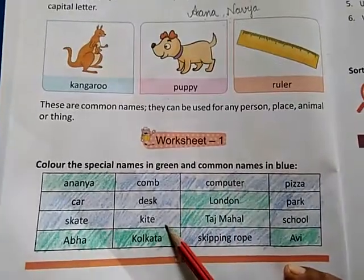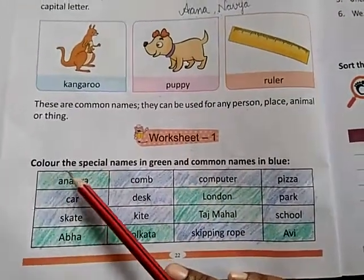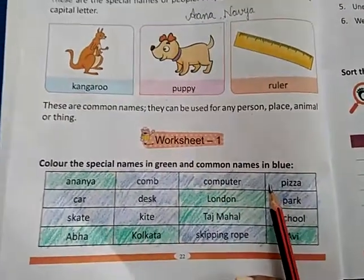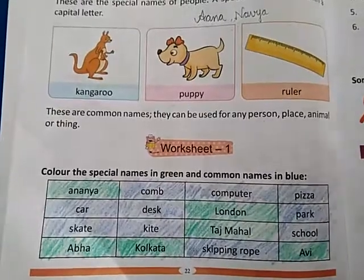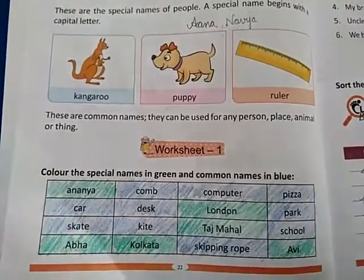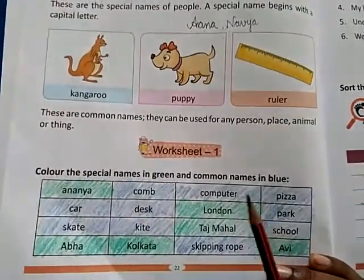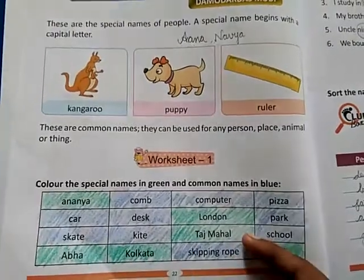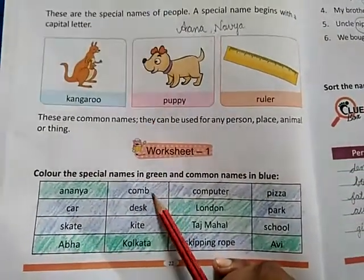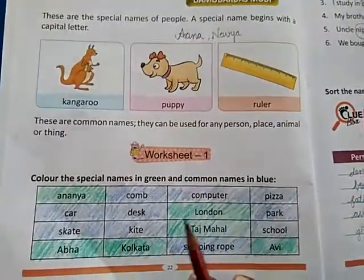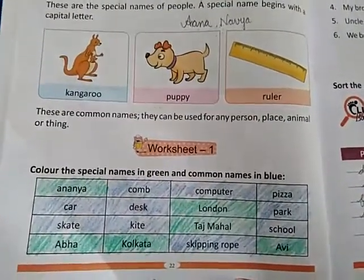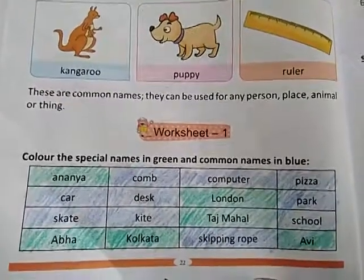Worksheet 1: Zoom classes mein maine complete kar li thi. Abhi aapko samjha deti hun ki kya karna hai. Color the special names in green — jo special name hain unko green color se color karna hai. And common names in blue. Ab aapko differentiate karna samajh aaya hoga. Special name ko ek toh aise pehchan sakte hain ki capital letters se start hote hain. Ananya special name hai, usko green kiya. Computer — common hai, to blue kar denge. Pizza — blue. Jo common hai usko blue karna hai aur jo special hai usko green karna hai.